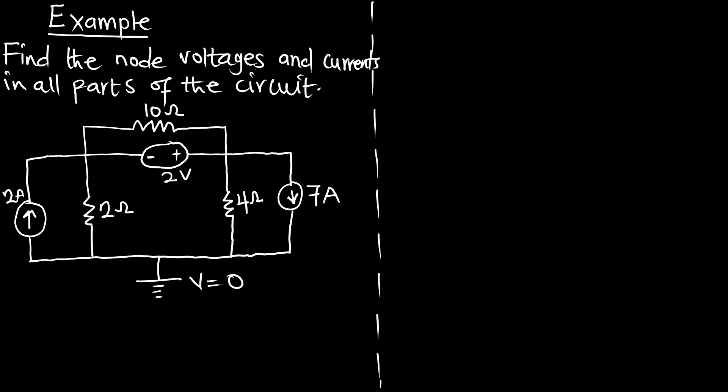I'll consider the other two as my non-reference nodes. I'll call here as my V1, node 1, and V2 as my node 2. Here you can see that there is a voltage source connected between two non-reference nodes, so straight away there is going to be a super node. We can also see a current source here and another current source here. Let's start the analysis for the node.